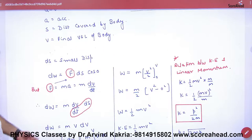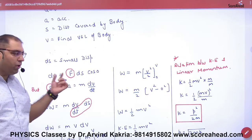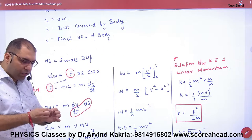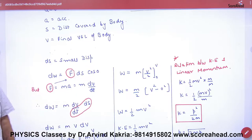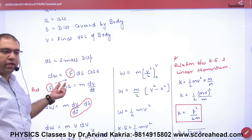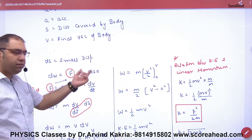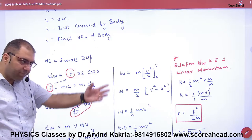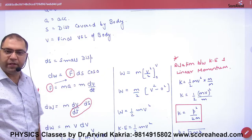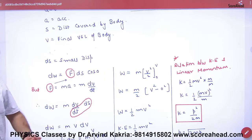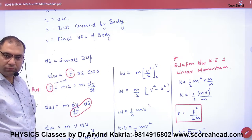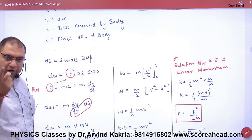Consider a small amount of work done when the body covers a small distance ds. The small work done dW equals F·ds·cos0, because the force is in the same direction as the displacement — both to the right — so the angle between them is zero.